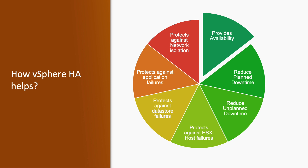vSphere HA also reduces unplanned downtime. If any ESXi host has an unplanned failure, vSphere HA will automatically migrate all virtual machines running on that host to a different ESXi host, so we do not experience a large downtime. It also protects against ESXi host failure — if an ESXi host goes down, it will failover all machines to a different ESXi host.